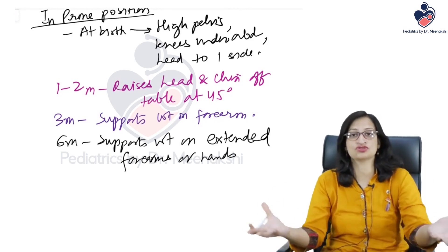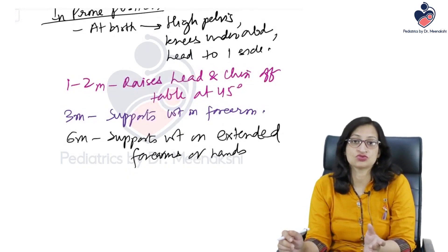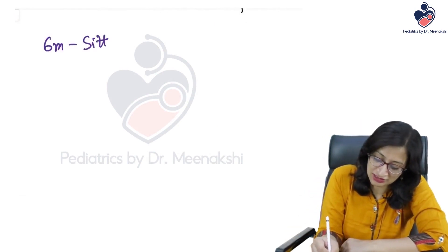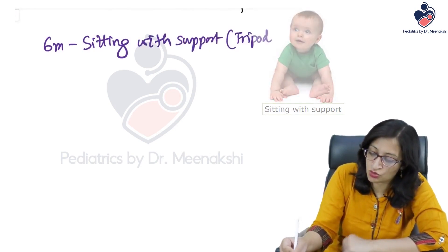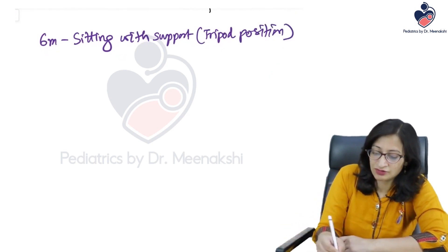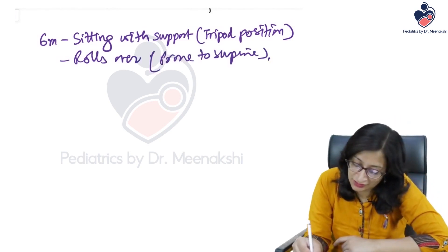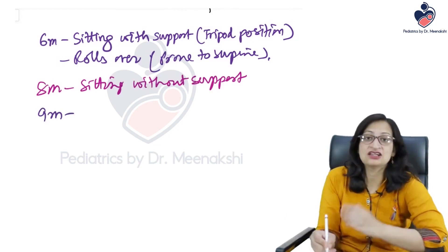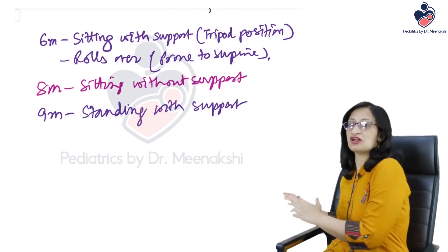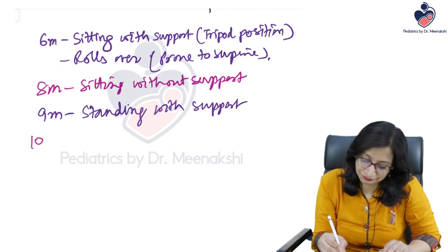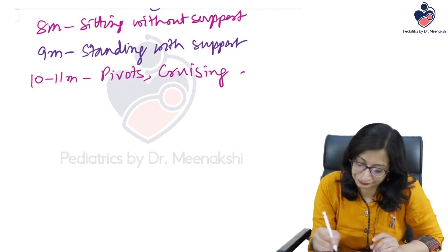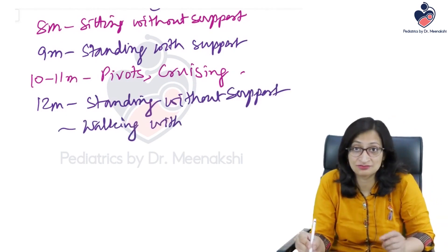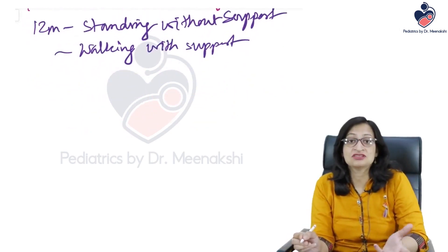You can get picture-based questions on these — the posture of the baby and you have to tell the age. Other important gross motor milestones: at six months, the child can sit with support (tripod position) and rolls over prone to supine. At seven months, supine to prone. At eight months, sitting without support. At nine months, standing with support. At ten to eleven months, pivots and cruising. At twelve months, standing without support and walking with one hand held.